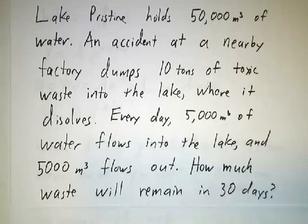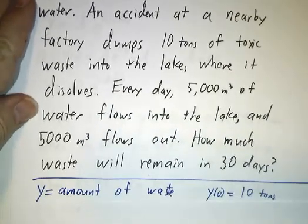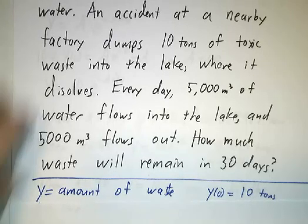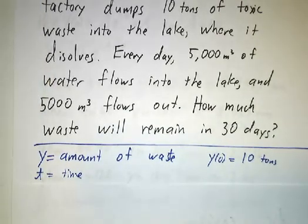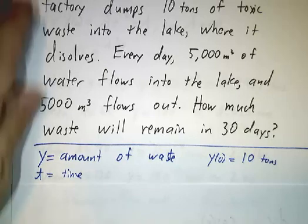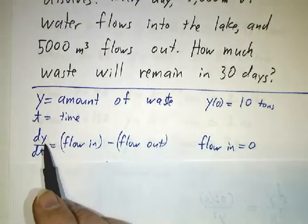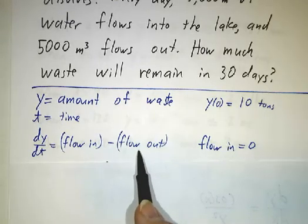So we're going to set this up as a differential equation. We'll let y be the amount of waste that's in the lake, so at time 0, that's 10 tons. And we'll let t be time, and we have to figure out at what rate is the toxic waste being flushed out of the lake. So the rate at which the amount of toxic stuff is changing is the rate at which the toxic stuff is flowing into the lake minus the rate at which it's flowing out.